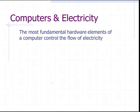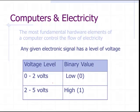The most fundamental hardware element of a computer controls the flow of electricity. Any given electrical signal has a level of voltage. Between zero to two volts, we consider it a low voltage. Between two to five volts, we consider it a high voltage. The reason why we don't just say zero volts is zero and five volts is a one is because when you're dealing with an electrical signal, you deal with variations, which means you've got to give room for error.